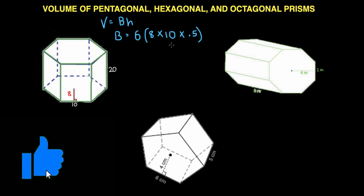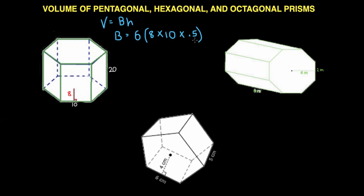So 8 times 10 is 80. 80 divided by 2, or multiplied by 0.5, is 40. 40 times 6 is 240. So big B is going to be 240.